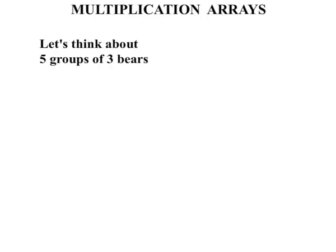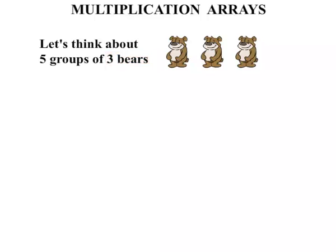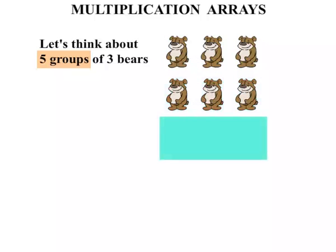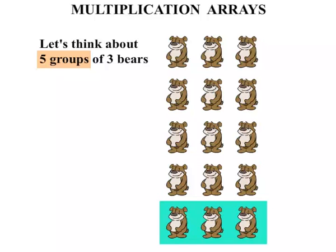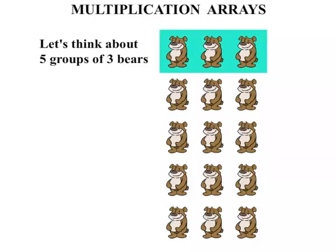Let's think about five groups of three bears. So three bears firstly: one, two, three. And we're going to have five groups of them. There's one group, two groups, three groups, four groups, five groups. So we've got five groups of three bears. Now let's count them all together.